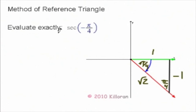So when I find the secant, remember, secant of any angle is equal to 1 over the cosine of that angle, the reciprocal of the answer.